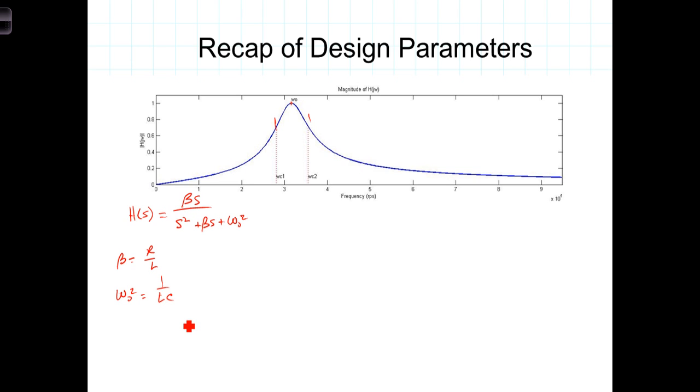Now the cutoff frequencies: omega C1 is equal to negative beta over 2 plus the square root of beta over 2 squared plus omega naught squared, and the second cutoff frequency omega C2 is equal to positive beta over 2 plus the square root of beta over 2 quantity squared plus omega naught squared.